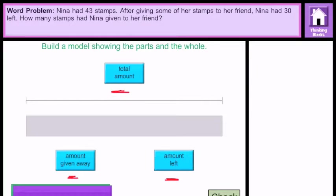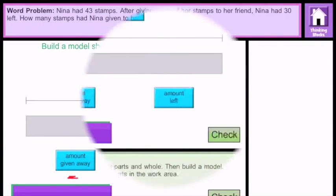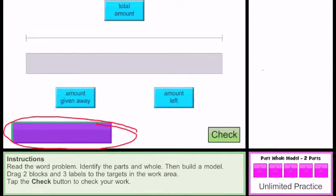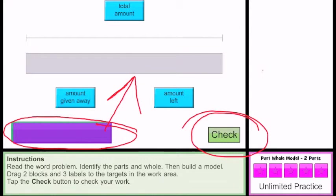In the next image, I'm going to move up the screen. We're still on that same screen, but as I move up you can see we still have these blocks to place. We're going to put them on the bar — they represent the amount given away and the amount left. Then we'll press the Check button to see if we're right.